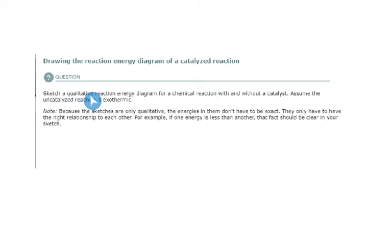So they say sketch a qualitative reaction energy diagram for a chemical reaction with and without a catalyst. Assume the uncatalyzed reaction is exothermic. Now, we'll note that this doesn't have to be perfect and only qualitative. That means no numbers involved. You don't have to have exact values for energies and things like that, but you need to have the overall trend.